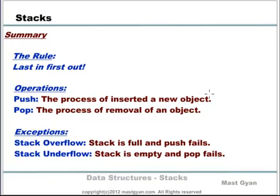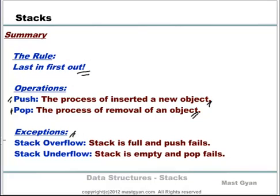Now we have come to the end of the stack data structure introduction. The next tutorial will be on the implementation details and an example to show the power of stack in solving programming problems. To summarize: the rule on which the stack operates is last in, first out. There are two main operations — push, which is inserting a new object into the stack, and pop, which is removal of an object from the stack. There are two exceptions: stack overflow, which happens when the stack is full and you try to push an object for which there is no space; and stack underflow, which happens when the stack is empty and you try to pop an object.